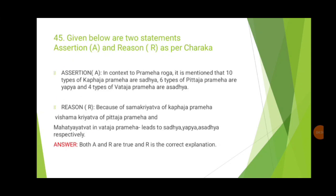The 45th question is an assertion-reason type on prameha roga. Assertion: ten types of khabaja prameha are sadhya, six types of pittaja prameha are yapya, and four types of vataja prameha are asadhya. The reason is samakriyatwa of khabaja prameha. This is directly from Charaka Prameha Chikitsa. The dushya of khabha and magas means treatment aimed at cutting down the samprapti makes it sadhya.